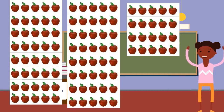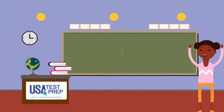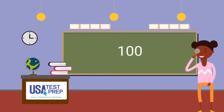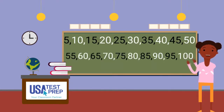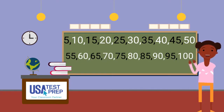It is much faster to count one hundred apples when counting by fives. I notice a pattern when I am counting by fives. Do you see a pattern? Yes, that's correct. All numbers end in five or zero.